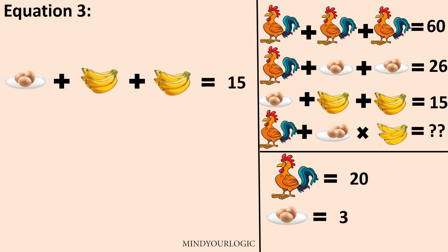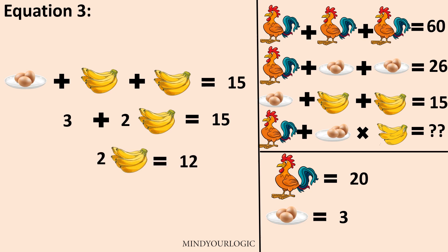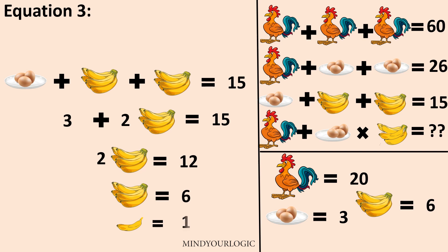In the third equation, we have 3 eggs plus 6 bananas plus 6 bananas is equal to 15. The value of egg is 1, so 3 eggs will be equal to 3. The equation becomes 3 plus 12 bananas equals 15, so 12 bananas equal 12 and 1 banana equals 1.